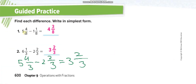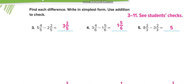Here, 5 minus 1 is straightforward — but wait, 1 is smaller than 2 again, so we take 1 carry from 6, making it 5. We add the denominator to the numerator: 3 plus 1 equals 4 over 3. The denominator stays the same. Subtracting: 5 minus 2 equals 3 whole, and 4 minus 2 equals 2 over 3. The answer is 3 and 2 over 3, which is already simplified.